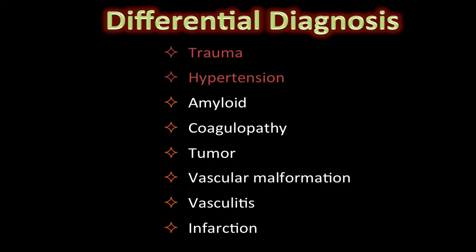Cerebellar hypertensive bleeds in particular are not uncommon. Amyloid angiopathy is usually seen in older patients, typically above 70 years old, and is classically accompanied by parenchymal volume loss, which is not seen on the provided image. Coagulation abnormalities should be considered in all patients, and this particular diagnosis could be easily known by asking about the patient's history. Various tumors may present with hemorrhage.